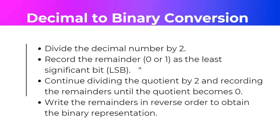For decimal to binary conversion, we need to divide the decimal number by 2, then record the remainder — which should be either 0 or 1 since we are dealing with the binary number system. We continue dividing the quotient by 2 and recording the remainders until the quotient reaches 0. After division, we write the remainders in reverse order, and that is the binary equivalent.